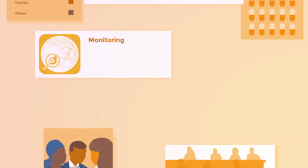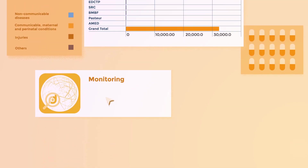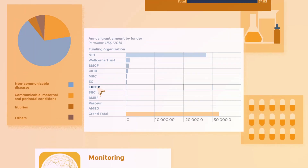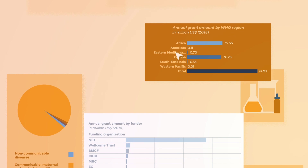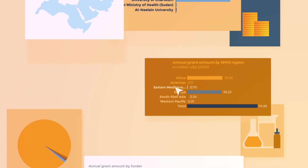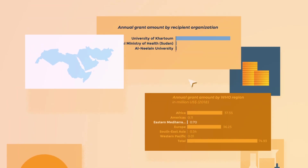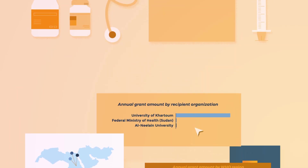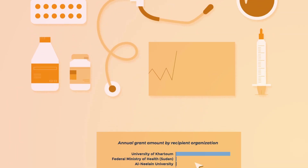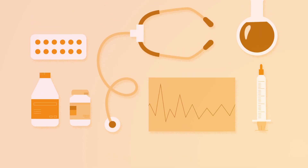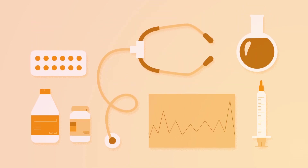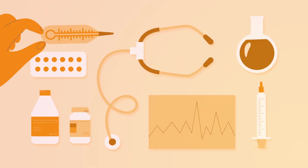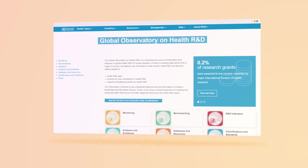The Global Observatory on Health R&D is an all-in-one interactive platform to find the information you need on who is doing what, where and with what funding, as it shines a light on WHO's strategic directions for health R&D.